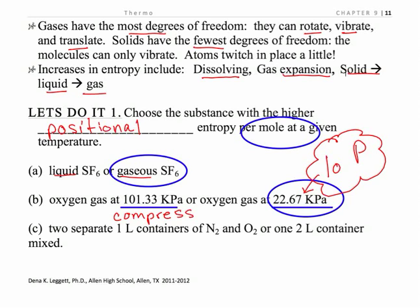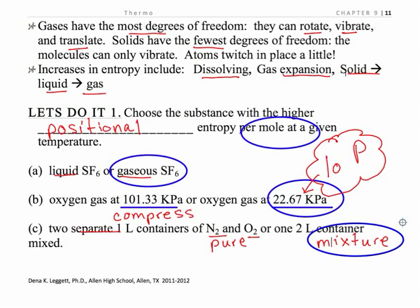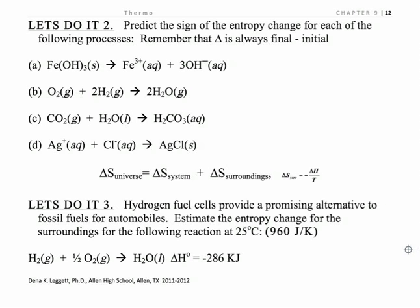Now consider two separate containers of nitrogen and oxygen — pure substances going to a mixture. If you had all the same type of molecule, there's really only one way to arrange them. But the minute you add a second type to the mix, there are all sorts of ways they can be arranged. So the highest positional entropy will be the mixture.